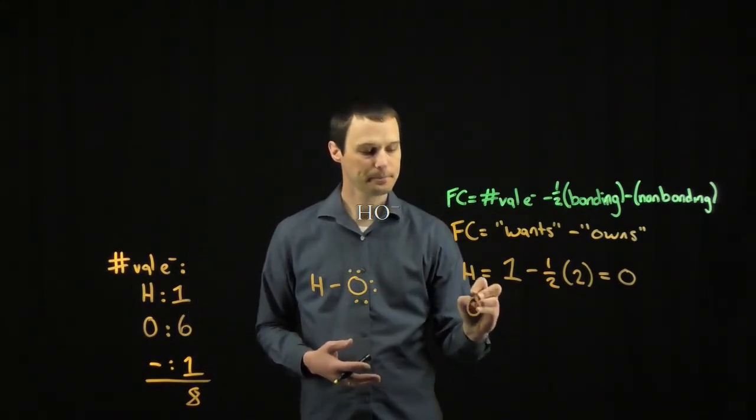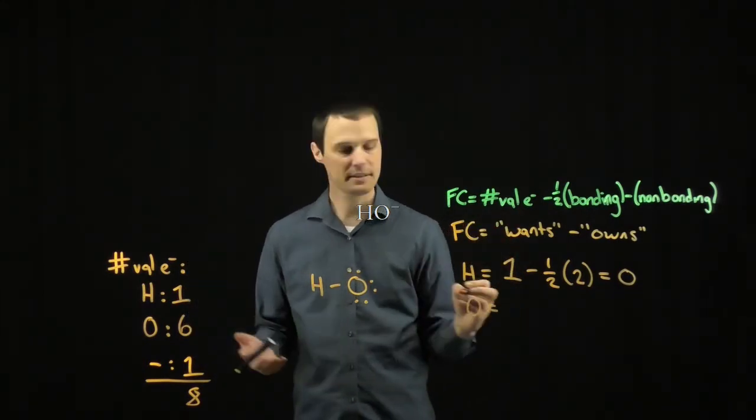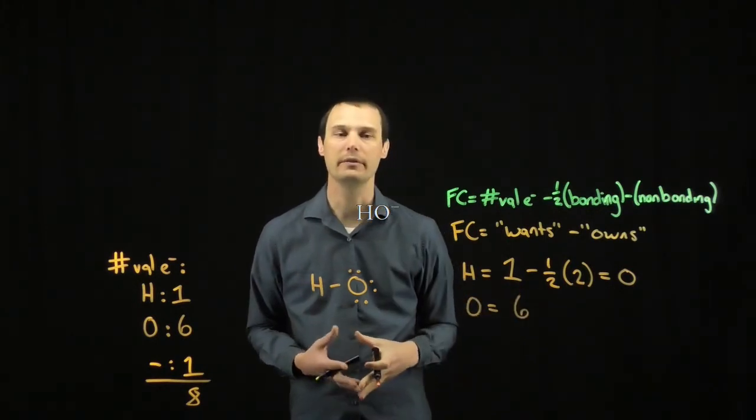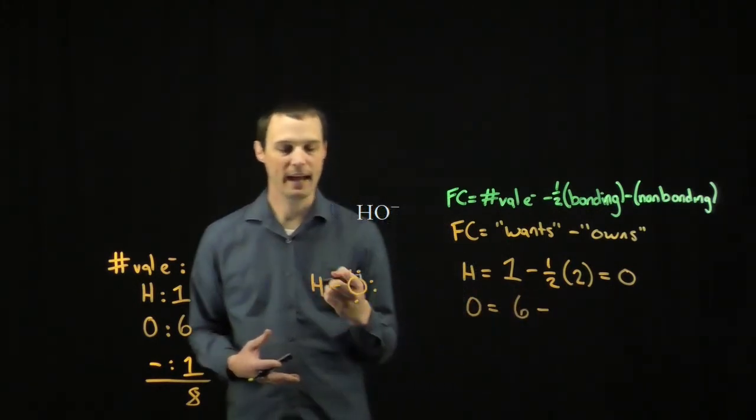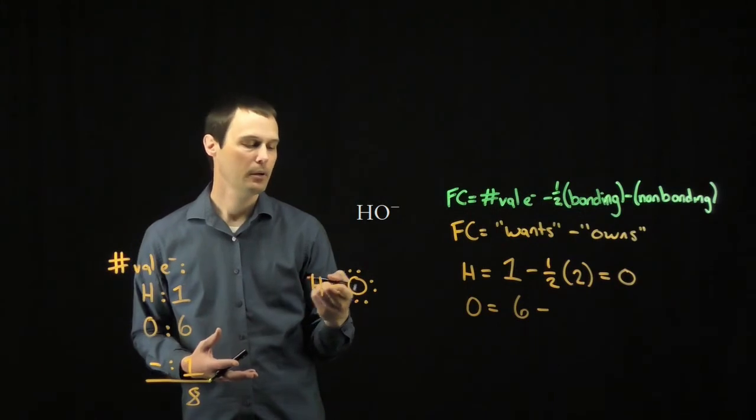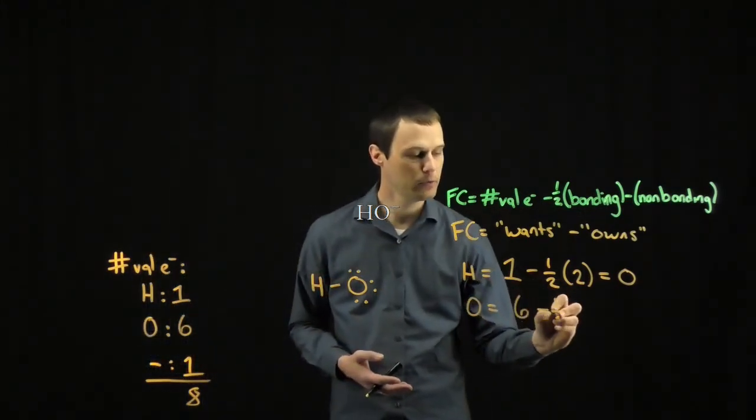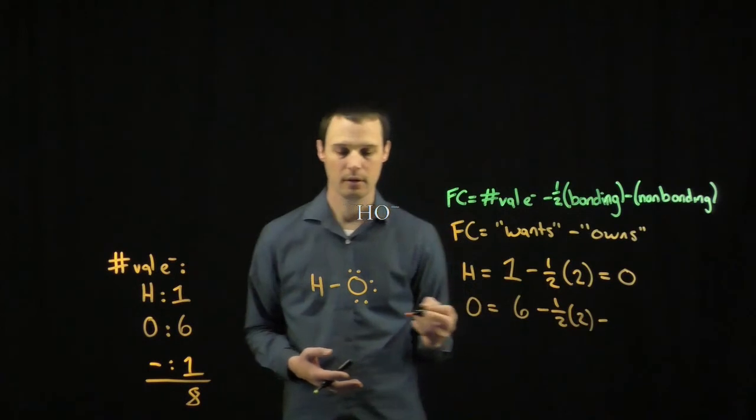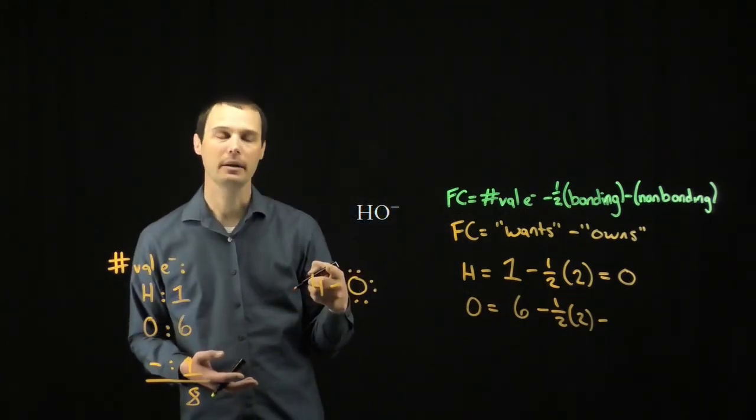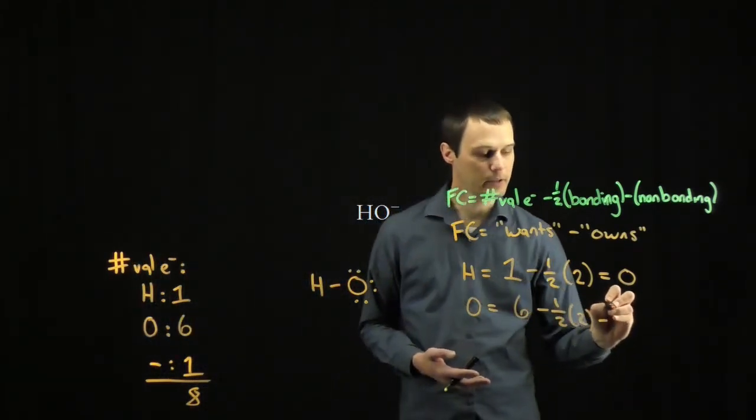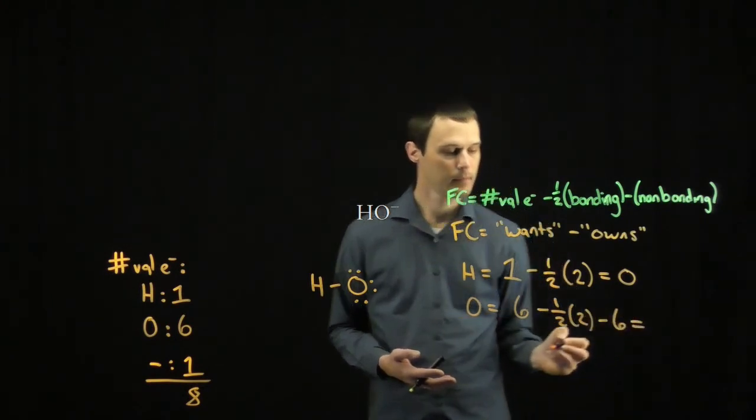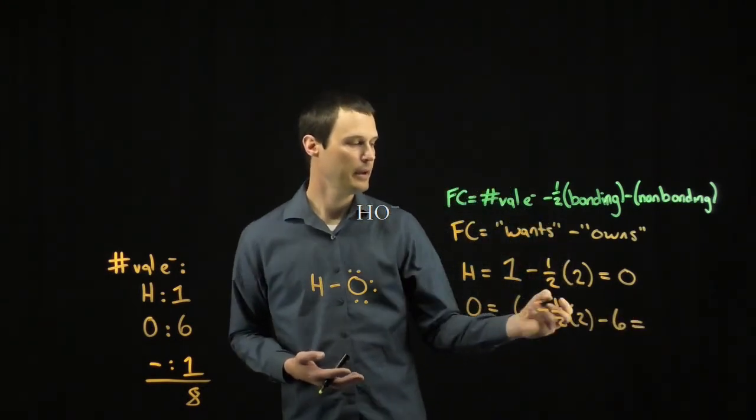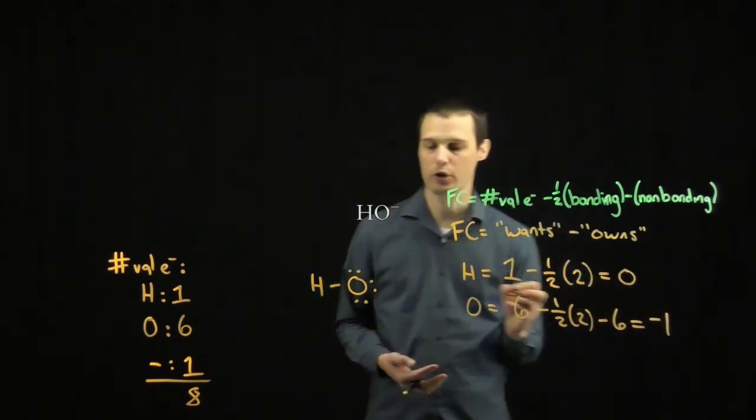Formal charge on oxygen, oxygen wants six electrons in its neutral ground state valence shell, and it owns half of the bonding and all of the non-bonding. With one bond, it owns half of those two bonding electrons, minus all of the non-bonding electrons, and there are six non-bonding electrons. Six minus six minus one gives oxygen a formal charge of negative one.